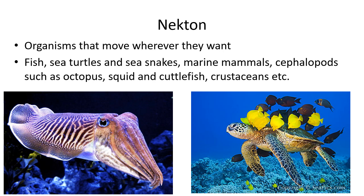On the other hand, we have nekton. Nekton are animals that can go wherever they want — they're large enough and have enough energy and muscle mass to move around to the areas where they need to feed. They're kind of like the teenagers of the sea, whereas the plankton were like younger kids who had to follow the current. Fish and things like turtles and cuttlefish that you see moving around are more generally referred to as nekton.